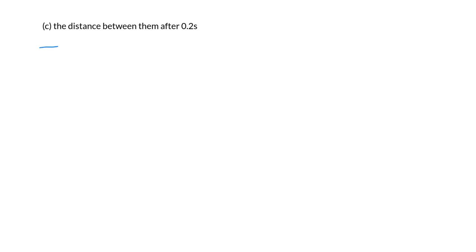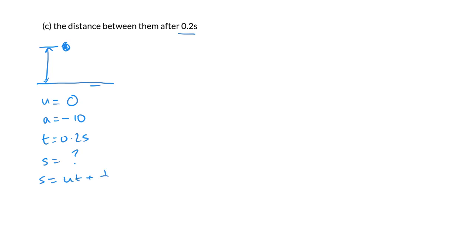Part C: find the distance between them after 0.2 seconds. Consider each stone separately. For the dropped stone: u = 0, a = minus 10, t = 0.2 seconds. Using s = ut + ½at²: s = 0 + ½ × (minus 10) × (0.2)² = minus 0.2 meters, so it has moved 0.2 meters downward.